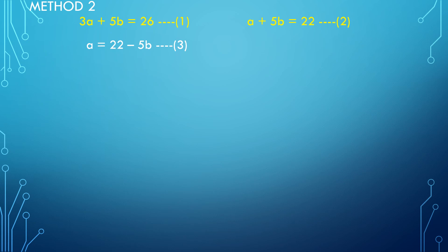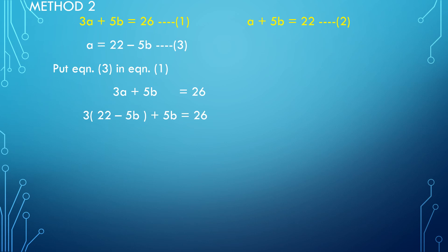Now put the value of A from equation 3 into equation number 1. Equation number 1 is 3A plus 5B equal to 26. Substituting A: 3 times (22 minus 5B) plus 5B equal to 26. Expanding: 66 minus 15B plus 5B equal to 26, which gives 66 minus 10B equal to 26.